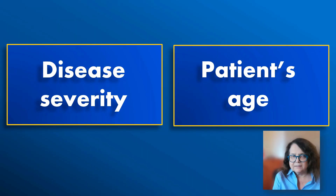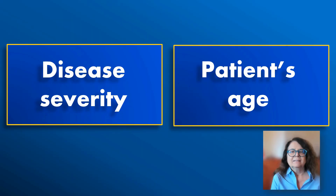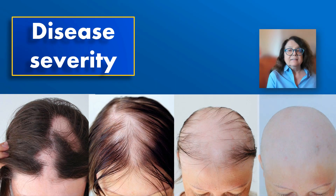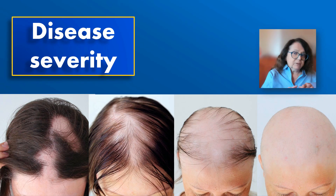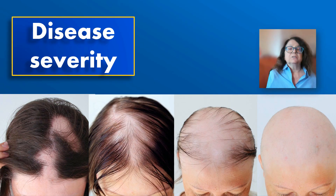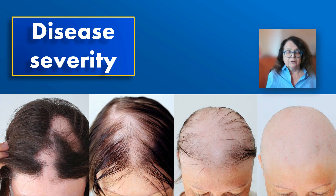The two factors that are most important from the perspective of registration are the disease severity and the age of the patient. Regarding disease severity, alopecia areata usually starts with a patch or several patches which then become confluent — the hairless area becomes bigger, it increases in size. And in up to 20% of patients, the alopecia will develop into total alopecia or alopecia universalis.